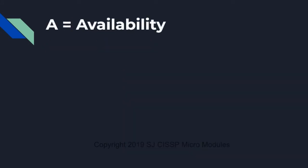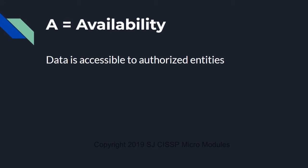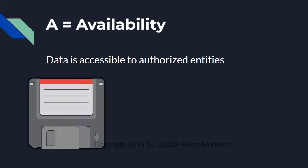The A stands for availability. This basically means making the data accessible to authorized entities. An example would be making a backup so that the website or data is available in case there's an incident that brings the data down or destroys it.